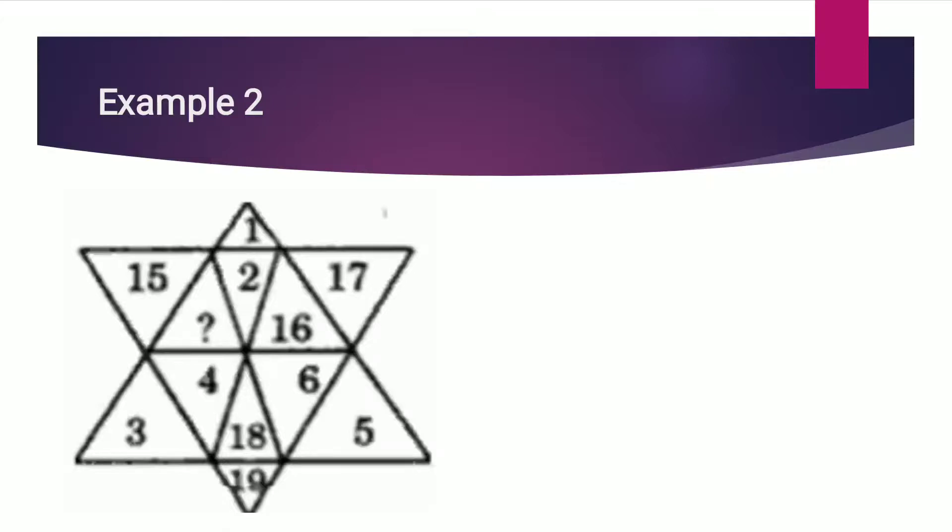A very simple pattern is followed in this matrix. Let me explain. First we will see 1 and 2 which is the uppermost part. So the outer number plus 1 we get the inner number. That is 1 plus 1 we get 2.